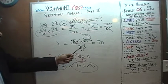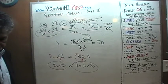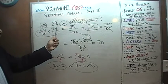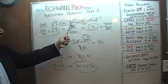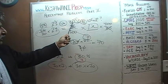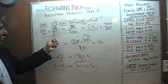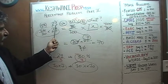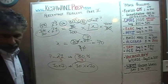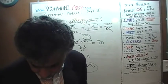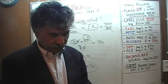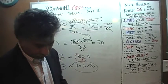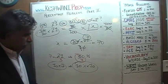So: 21 is 30%; 10% is a third of that, which is 7; and 100% must be 70. It's so simple you can do it in your head. Let's do number 14.